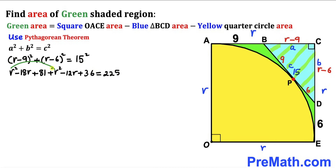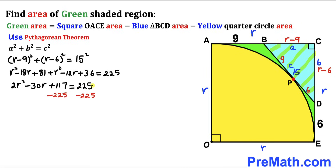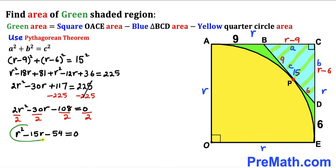Combining like terms on the left-hand side and subtracting 225 from both sides, we get 2r² − 30r − 108 = 0. Dividing every term by 2 simplifies this to r² − 15r − 54 = 0.